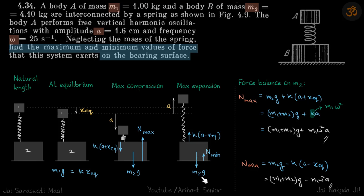The downward force is still m2g, and this time we can say the normal reaction will be minimum. Let's write the force balance equation on this mass in both cases and we'll get the values of N_max and N_min. Force balance on m2: N_max equals m2g plus k(a + x_eq).